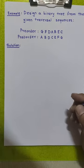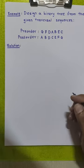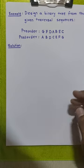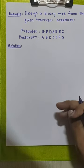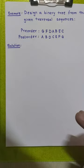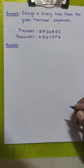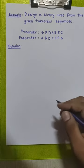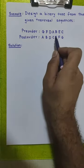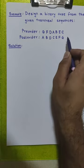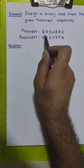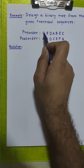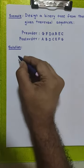In this example they have not given us the inorder sequence, so it is difficult to find the left and right child of the tree. To find the root node we are going to use the pre-order sequence. As we know, in pre-order sequence the root always comes at the beginning, so the root of this tree is node G.